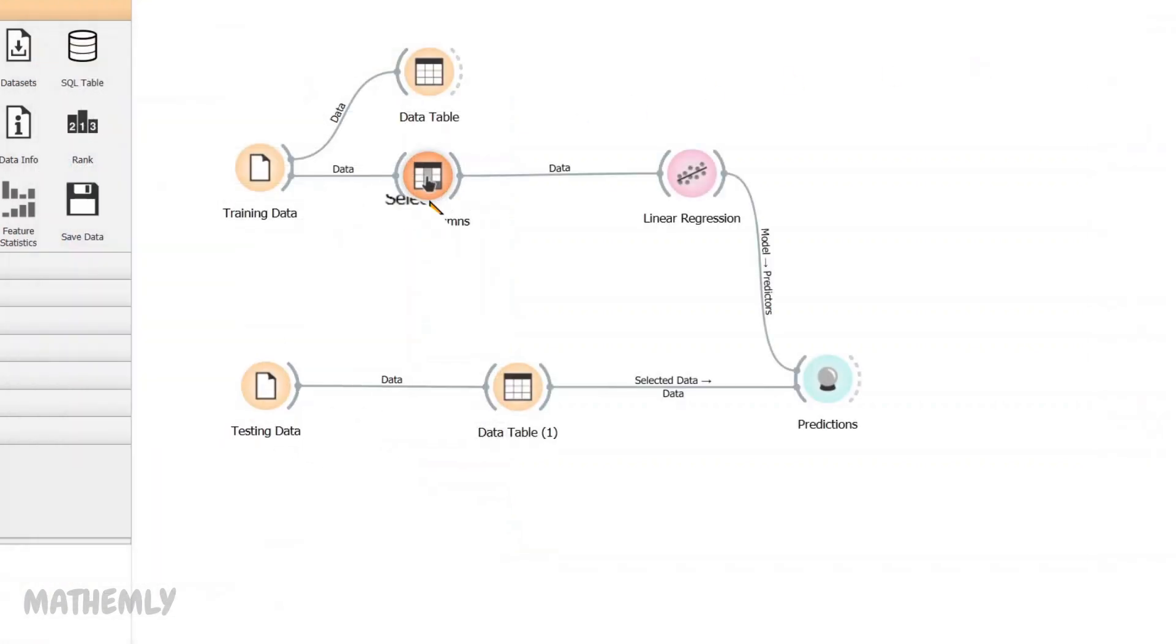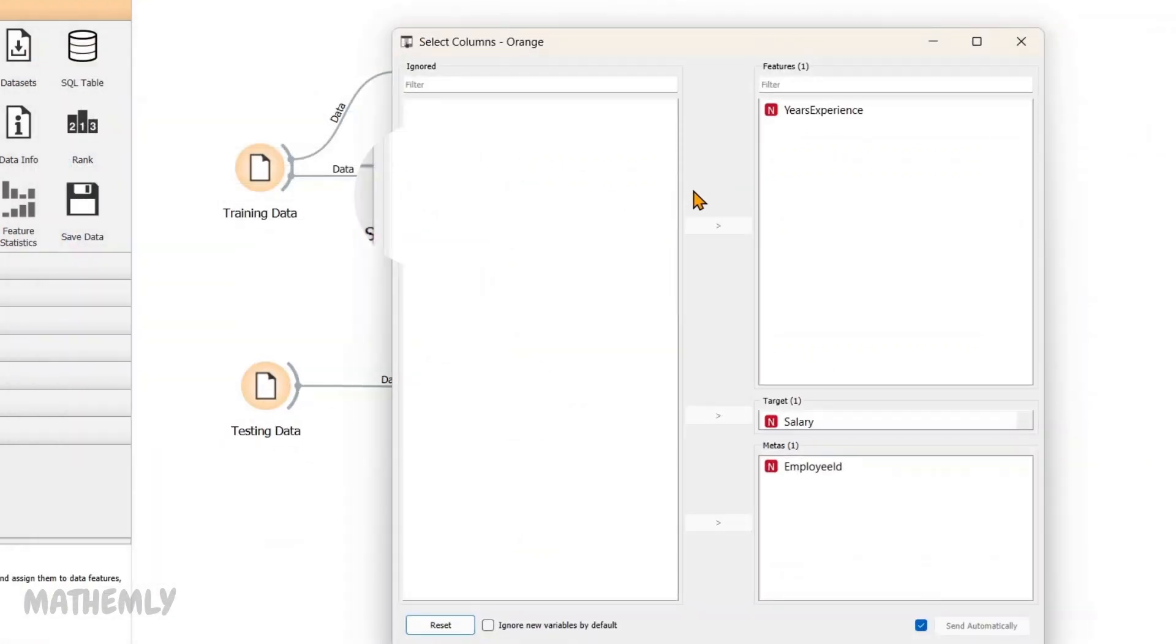Next, I have used the Select Columns widget to choose the Features, Target, and Metas information for the prediction task. In the Features section, I have added years experience, as this is the input variable we will be using to predict salaries. In the Target section, I have added salary, which is the output we aim to predict. Finally, I have included ID in the Meta section. Meta columns don't influence the prediction, but provide additional information, for instance, tracking the individual records.